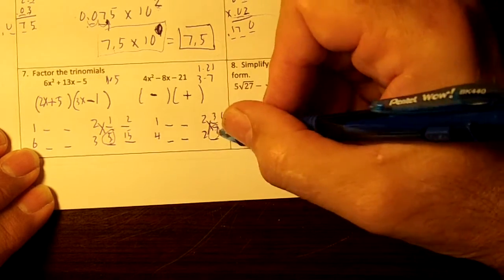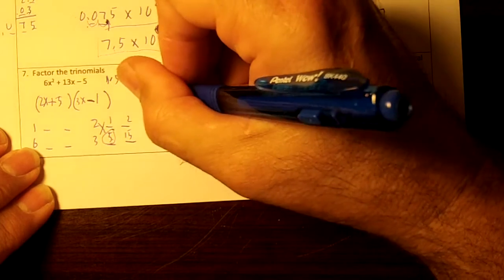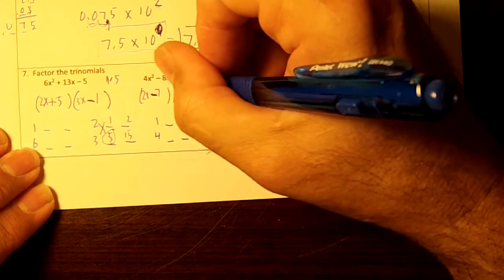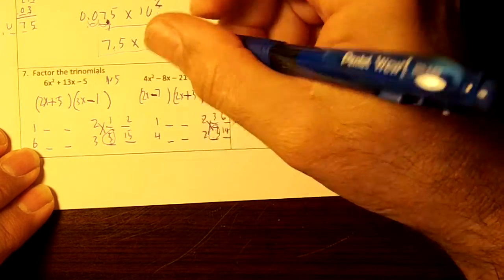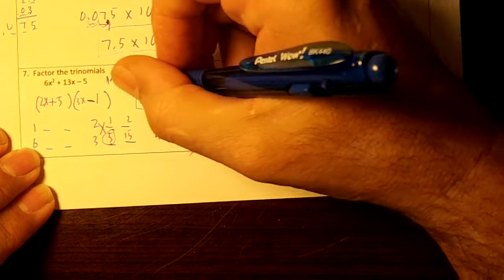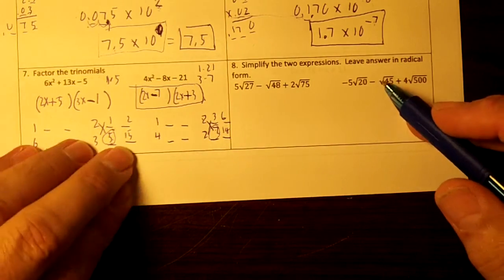14's bigger. Circle the 7. The 2 and 7 go first. So 2x minus 7 and 2x plus 3. Okay, boom. Okay, right here.